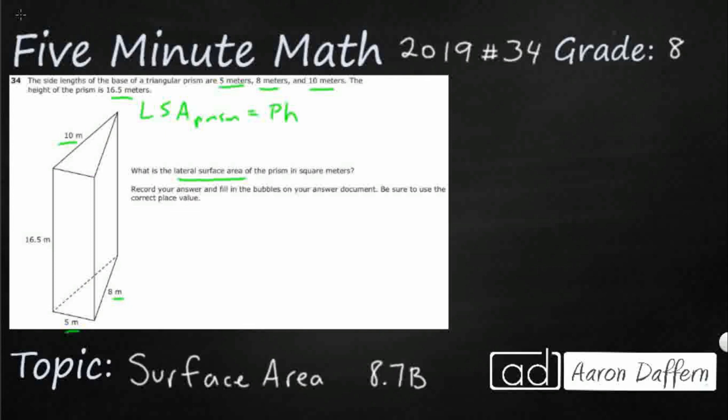So the lateral surface area is just the surface area of the three rectangles that touch or connect to the two bases. My base is this triangle right here—we're gonna exclude that. The other base is this other triangle—we're gonna exclude that. We're looking for these rectangles here.